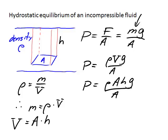Now here, you're probably noticing that we can cancel the A's. And so we are left with pressure is equal to ρ g times h.